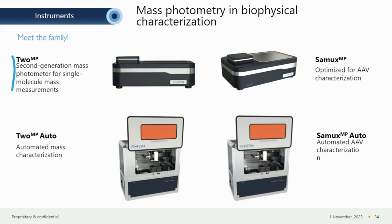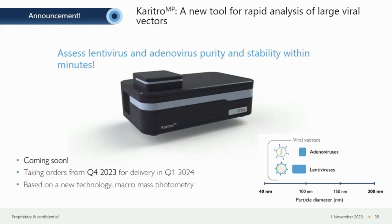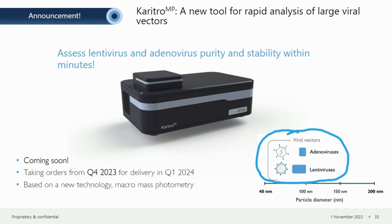I'm excited to announce that Refine is extending our family of mass photometers with a new tool for rapid analysis of large viral vectors: the Caritro MP. This benchtop instrument allows assessment of lentivirus and adenovirus purity and stability within minutes. It will be coming to market soon — orders are being taken now for delivery in the first quarter of next year. The Caritro MP is based on a new technology called macromass photometry, required because these viral vectors have much larger particle diameters of up to about 100 nanometers, which cannot be measured by standard mass photometry alone.